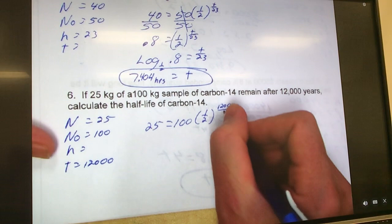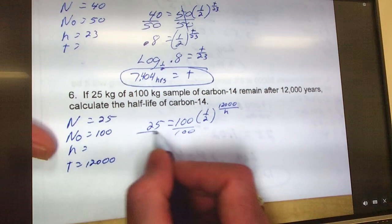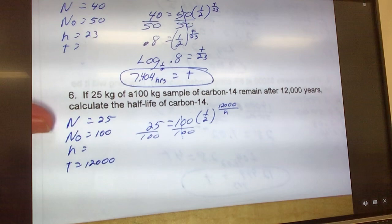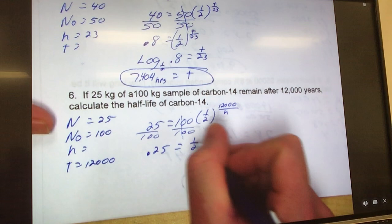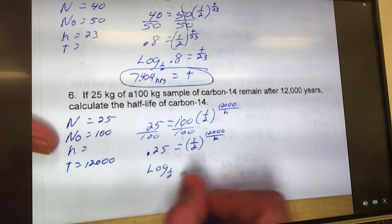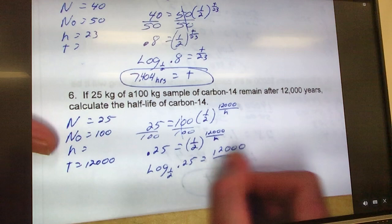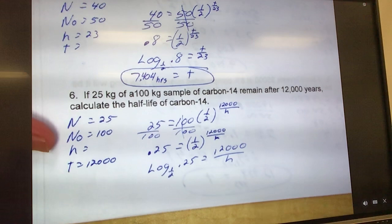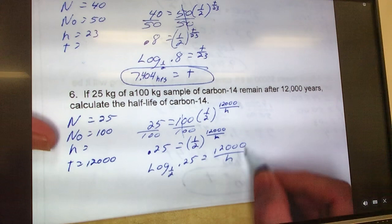First thing I want to do is divide by 100. 25 divided by 100 is 0.25, right? Equals one-half raised to the 12,000 over H. So log base one-half, and 0.25 equals 12,000 over H. So I've got to get this guy here, and then I'm going to end up dividing it by 12,000, because now it's on the top, right? So it's being divided by H, do the opposite. We flip it, do opposite to be able to get the other side.